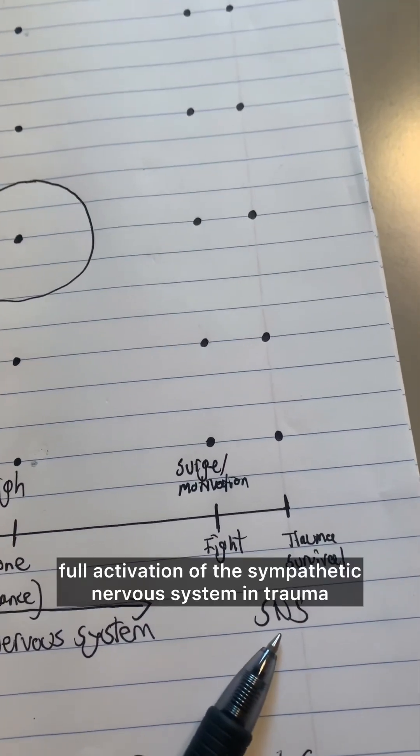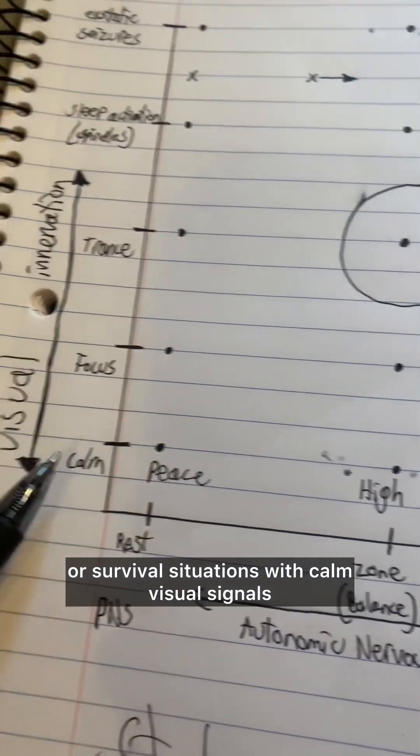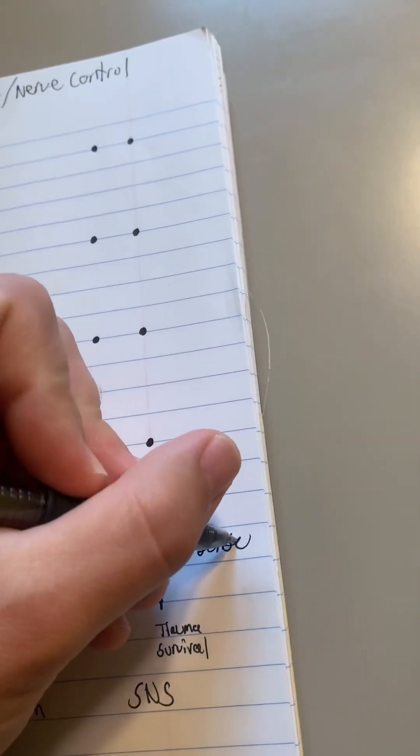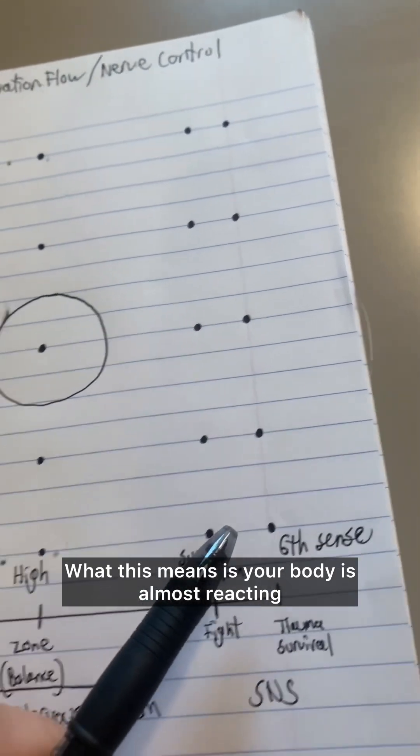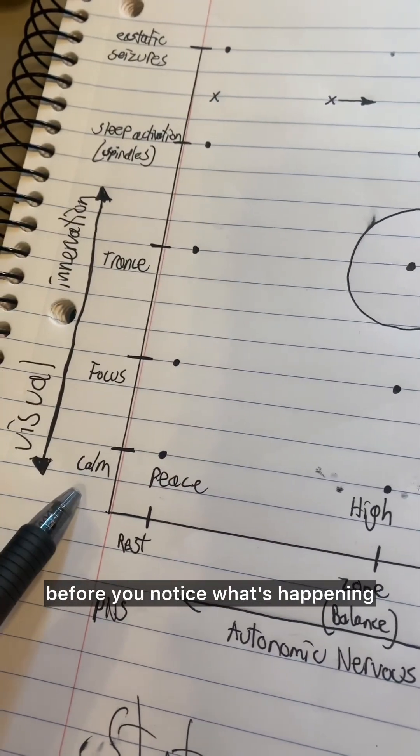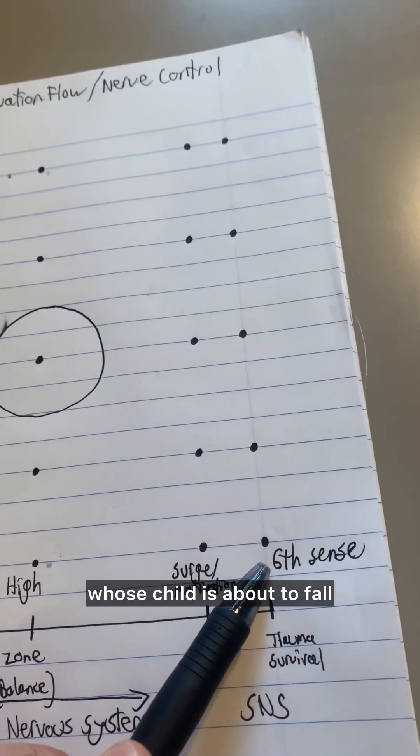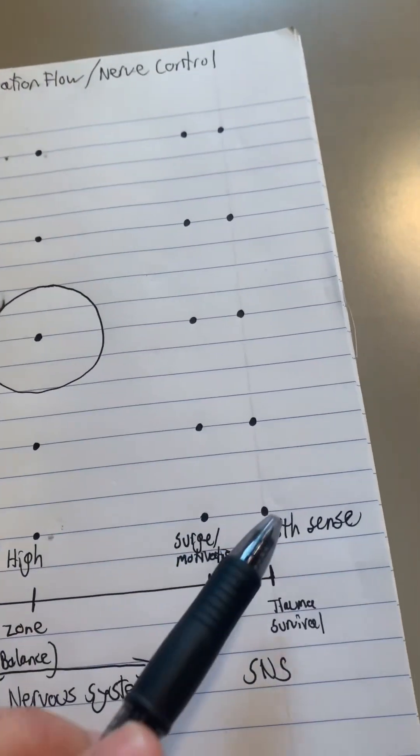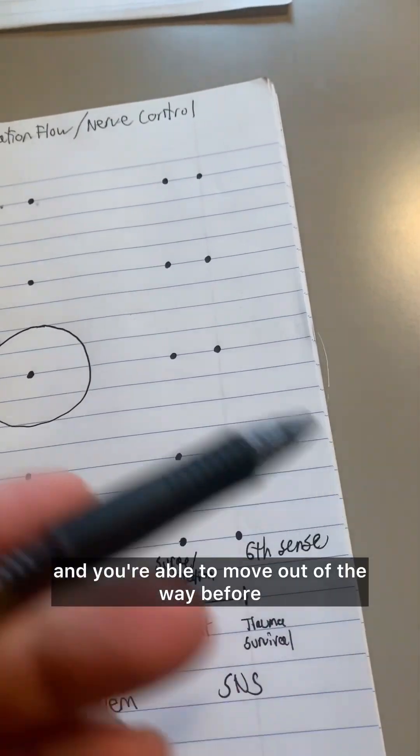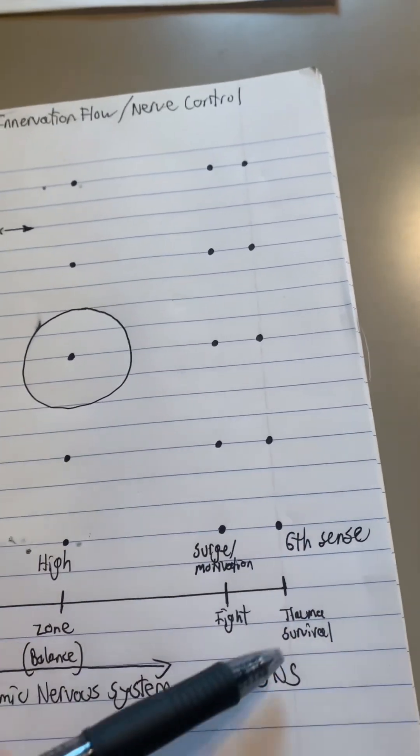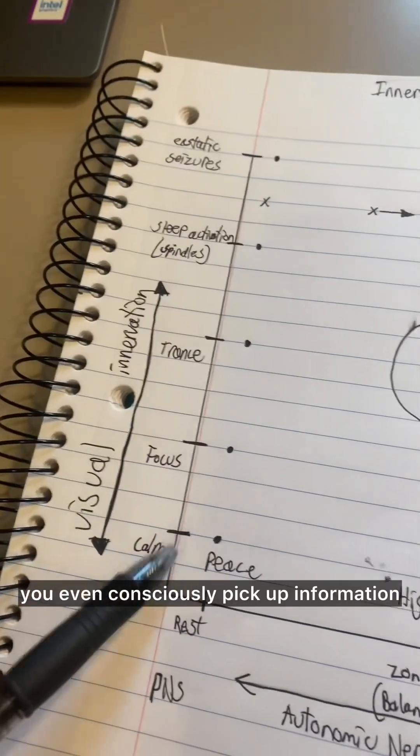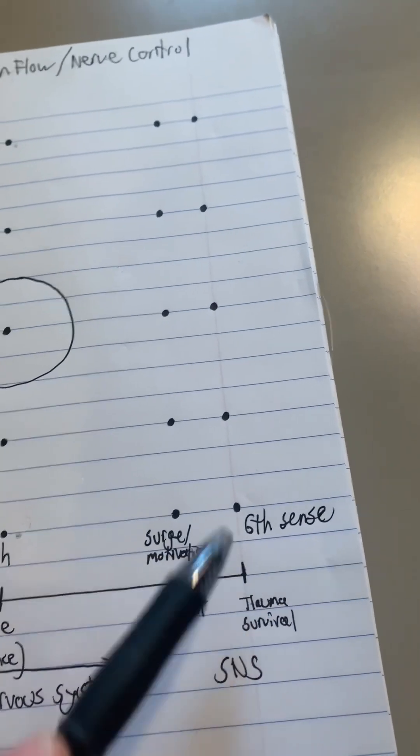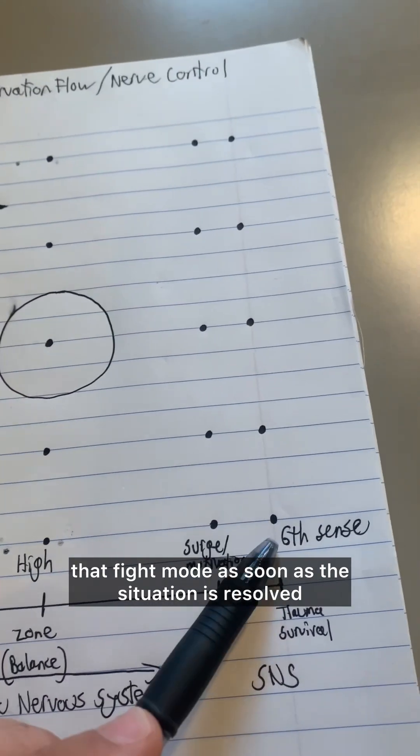In full activation of the sympathetic nervous system in trauma or survival situations with calm visual signals, we could call this sixth sense. What this means is your body is almost reacting before you realize what's happening, before you notice what's happening. Think of a parent whose child is about to fall, and without them even paying attention, their body is moved in reaction to that to catch their kid. Or without realizing it, there's a car incoming, and you're able to move out of the way before you even notice that the car was actually coming.